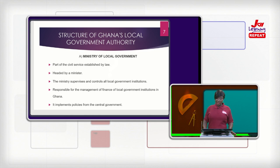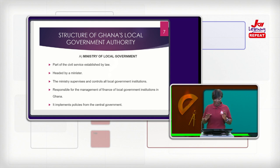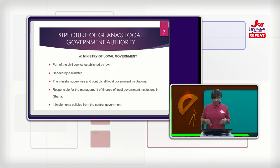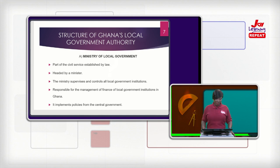The Ministry of Local Government is also responsible for the management of finance of local government institutions in Ghana, and it also implements policies from the central government. So the Ministry of Local Government supervises and controls all local government administrations in Ghana, manages their finances, oversees revenue sources and auditing of local government institutions, and helps the central government implement policies to help the local people.